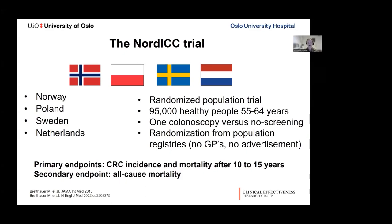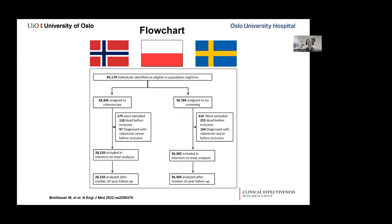The primary endpoints were colorectal cancer incidence and mortality after 10 to 15 years; this paper deals with the 10-year results. All-cause mortality was a secondary endpoint. For the current analysis, data were retrievable from three of the four countries — Norway, Poland, and Sweden — leaving 85,000 individuals randomized in a one-to-two fashion: approximately 28,000 to colonoscopy and 56,000 to no screening.